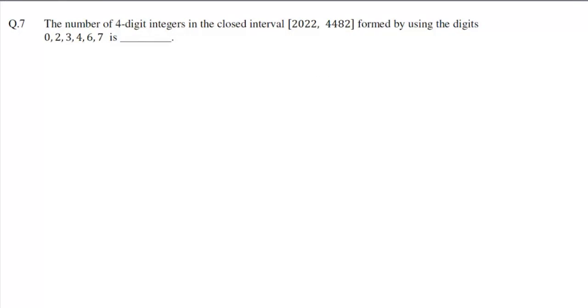Now the question is: the number of four-digit integers in the closed interval [2022, 4482] formed by using the digits 0, 2, 3, 4, 6, 7. Since we have numbers starting with 2022 till numbers ending with 4482, what we will do is start with numbers which start with 202.